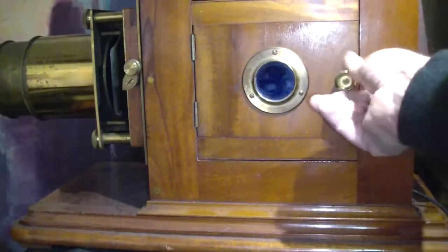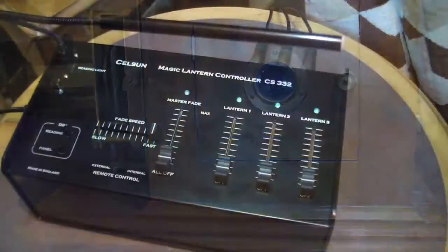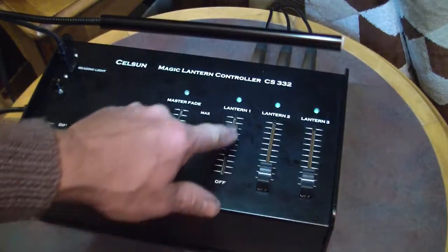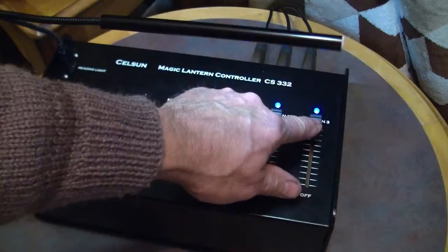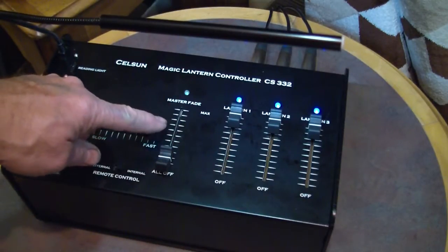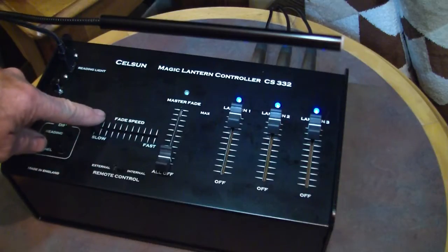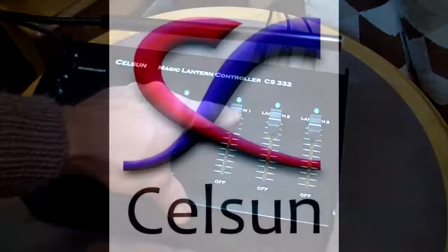The optimal position for the lamp unit can really only be found by powering everything up without a slide and focusing onto a screen and seeing what sort of light disc you get. What you need to aim for is illumination top and bottom and left and right. In the next video we will show how the CS332 controller is used.